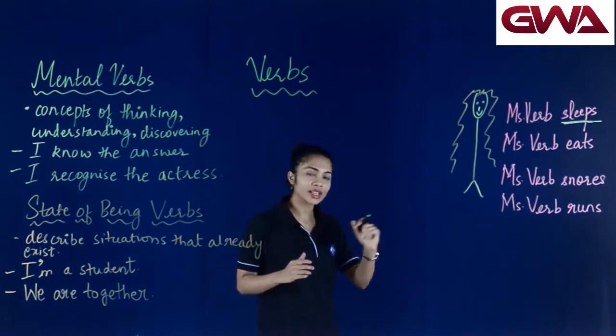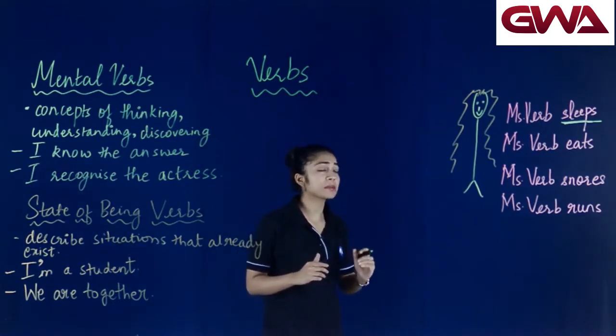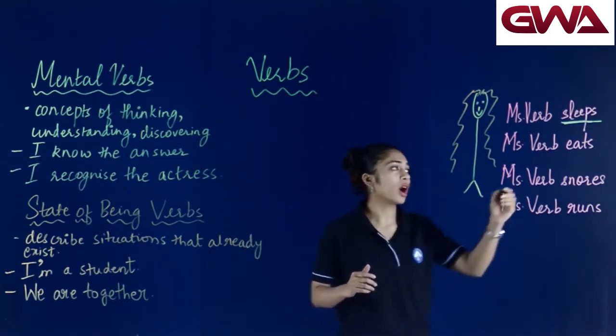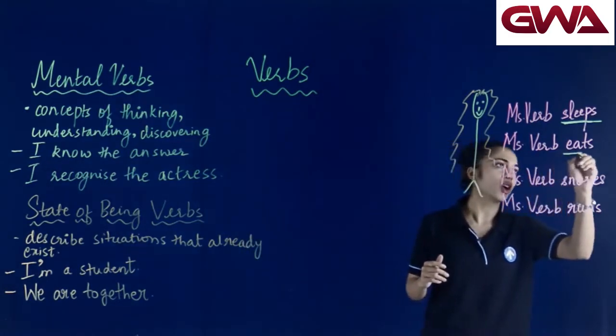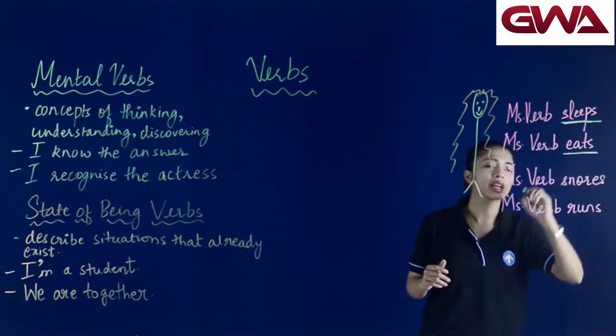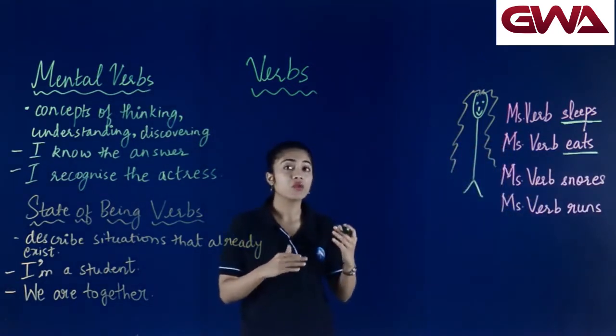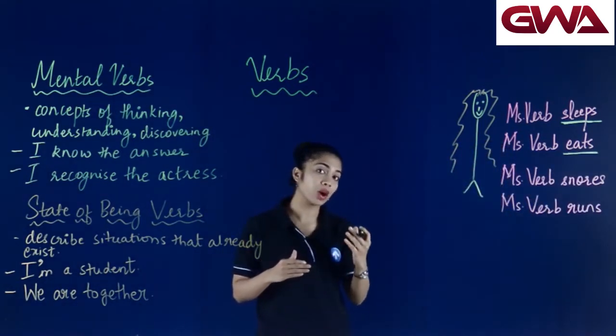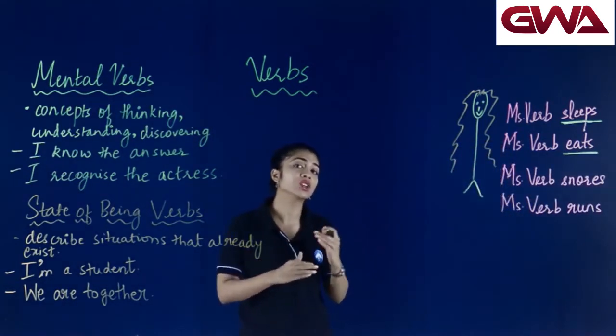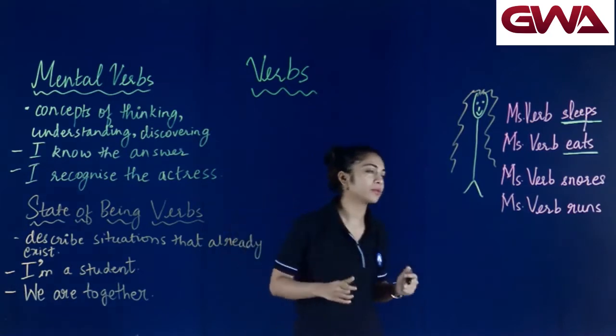Let's take a look at the second sentence. Miss Verb eats — she eats. And this is the action, that is eating. It is also a verb because it denotes action.